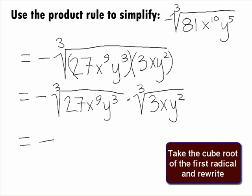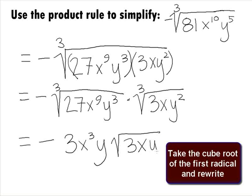Since the cube root of 27x to the 9th y cubed is 3x cubed y, we can simplify this to get our final answer of negative 3x cubed y times the cube root of 3xy squared.